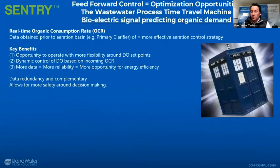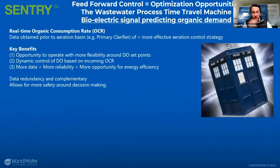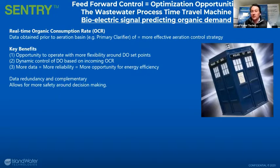That's what we're hoping to do with the Sentry platform. We have active biomass growing on conductive surfaces telling us in real time how much organic carbon the biomass is consuming. If we can place sensors in primary clarifiers and provide that insight to the plant operator — this is exactly what is going to come in, this is how much carbon the biomass are looking at, this is how much they're consuming — we can use that to be predictive of how much aeration we'll need downstream. Whether we call it microbial electron transfer or organic consumption rate, we're providing a measure of exactly how much organic carbon is being oxidized in real time.